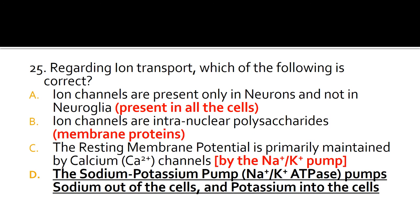A is false because ion channels are present in all cells, whether neurons or neuroglia — they are membrane proteins. C is false because the resting membrane potential is primarily maintained by the sodium-potassium ATPase pump. And that brings us to the end of this presentation. Hope you found the material useful. Thank you for watching.